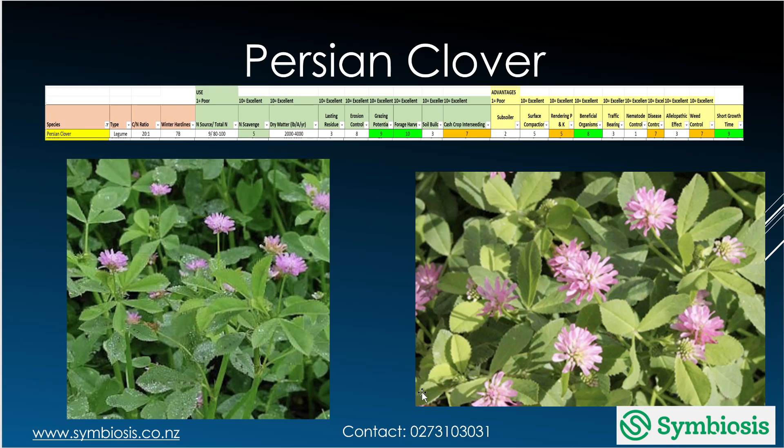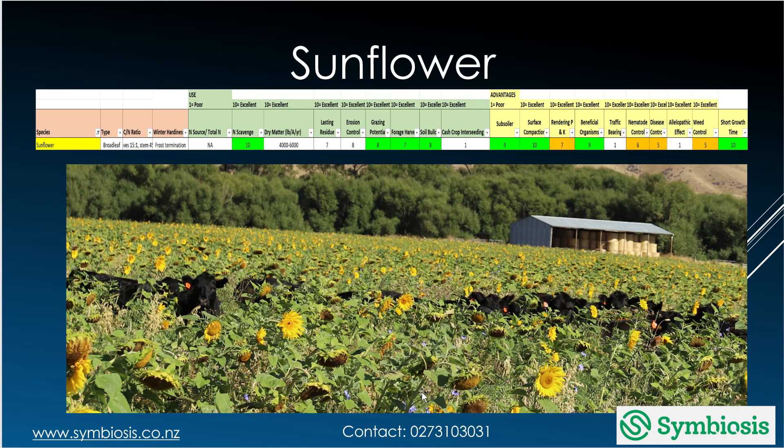Persian clover is good for grazing, fixes nitrogen, and is good for beneficial organisms. Sunflower is very good at scavenging nitrogen, good for grazing, good for erosion control, a good subsoiler, good for dealing with surface compaction, good at rendering phosphorus and potassium, and good for beneficial organisms.